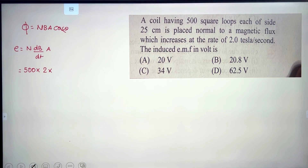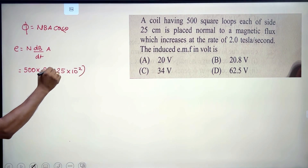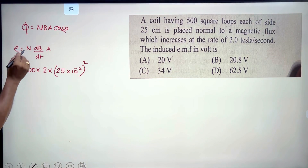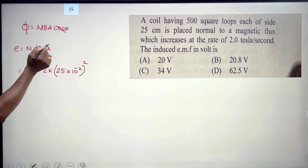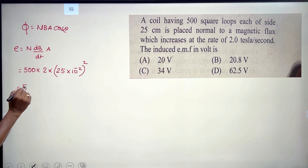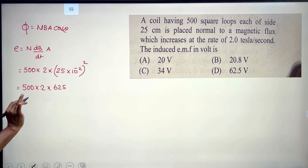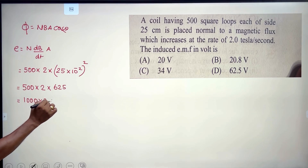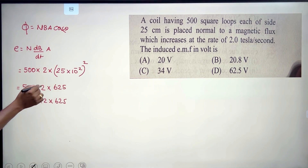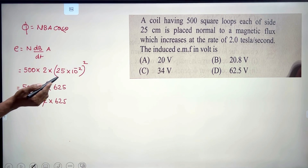The side is 25 centimeters, which equals 25 × 10⁻² meters, so the area is (25 × 10⁻²)² square meters. With N = 500 and dB/dt = 2, the calculation gives the answer as 62.5 volts. The correct option is C.